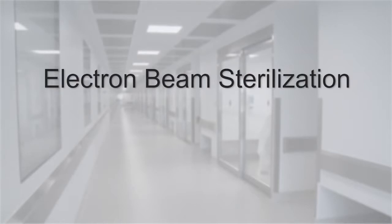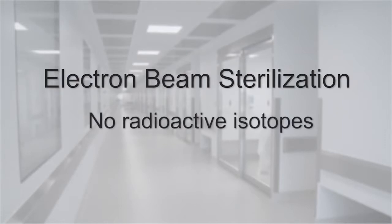Secondly, electron beam sterilization is pretty self-explanatory. It uses an electron beam to sterilize the tissue versus gamma radiation, which uses a radioactive isotope, a cobalt-60 source.